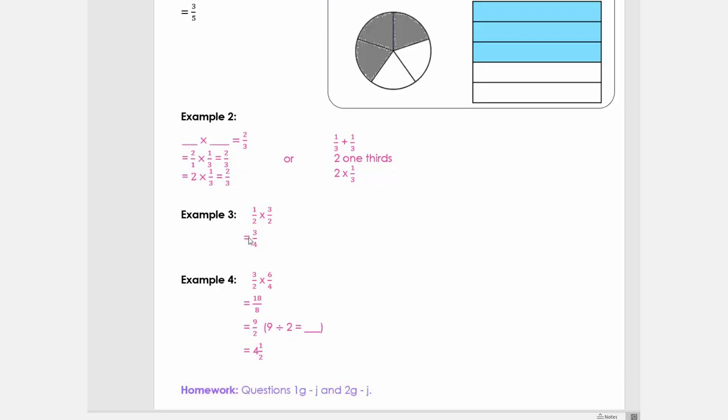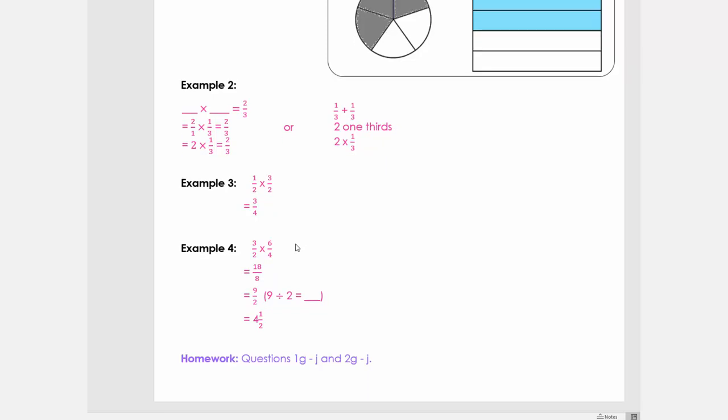Let's go to example number 3. Here we're just going to multiply 2 fractions. We're going to multiply the top numbers and then the bottom numbers.